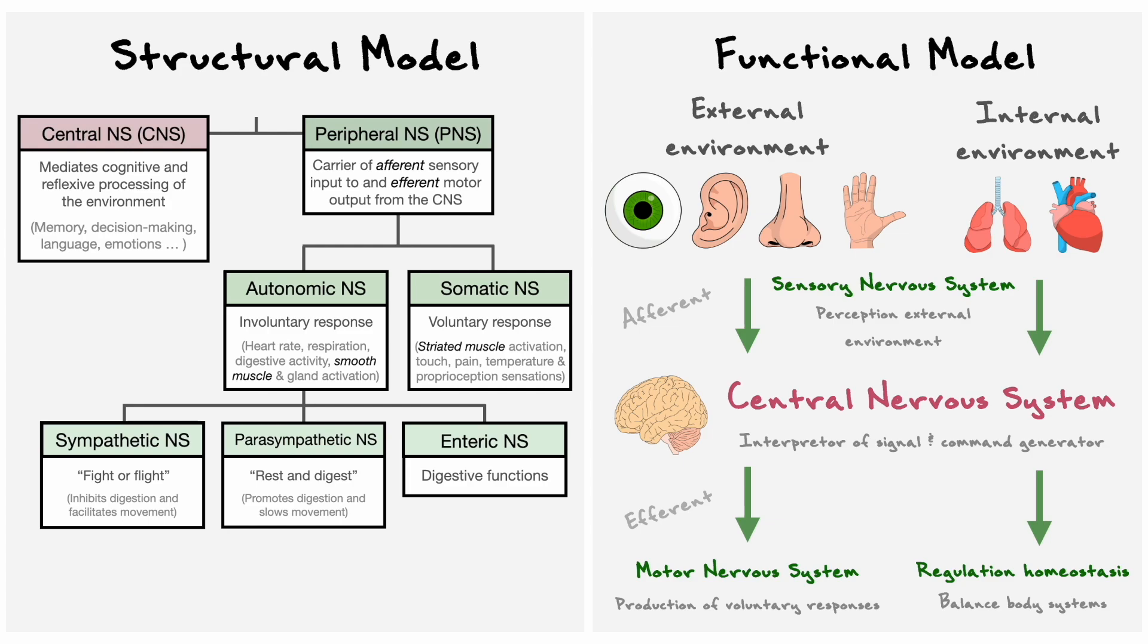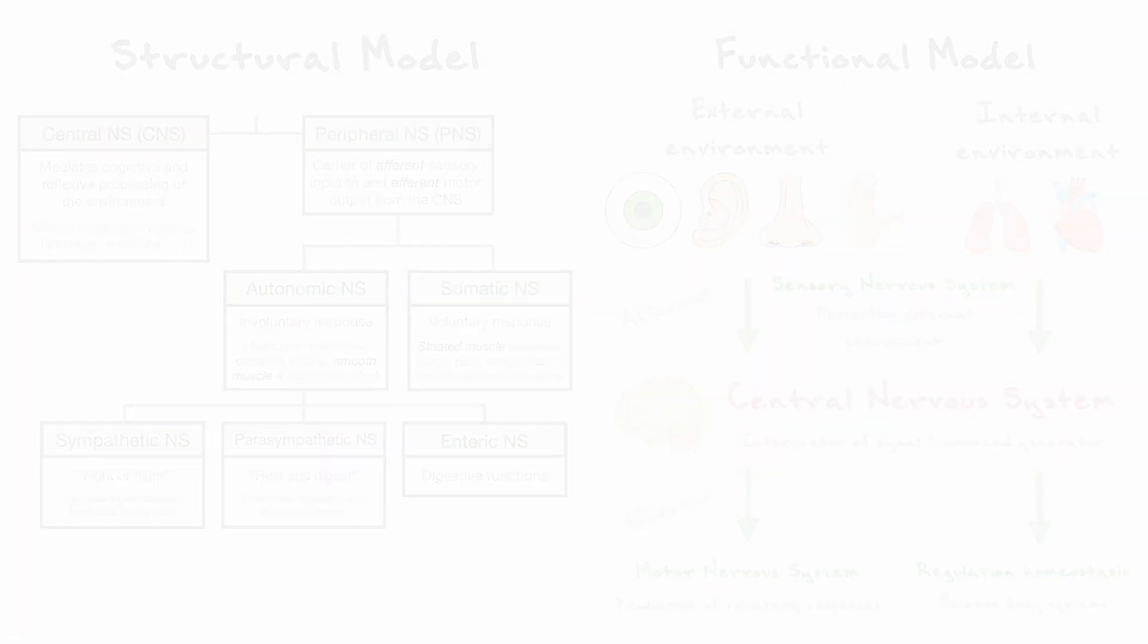Now that we have a good intuition on the structures and functions of the nervous system, we can start discussing the anatomy of the central nervous system. A critical element that we need to establish before we actually look at CNS structures is to define the terminology that will be used to navigate across the CNS.